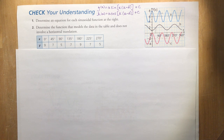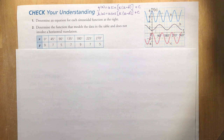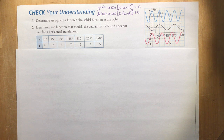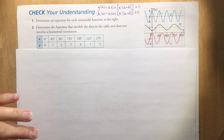Section 6.6 in Nelson Functions talks about how to determine sinusoidal equations from graphs and tables of values. Before starting this lesson, it's important to remember that there are a number of different equations you can have for each sinusoidal function — they can be sine graphs or cosine graphs, positive or negative. So you really have four options.